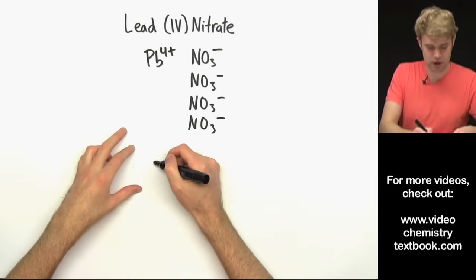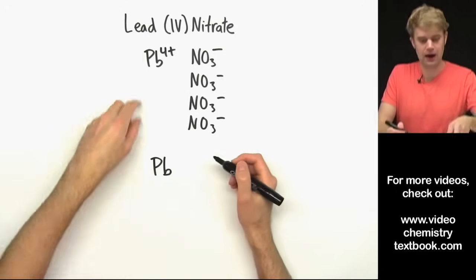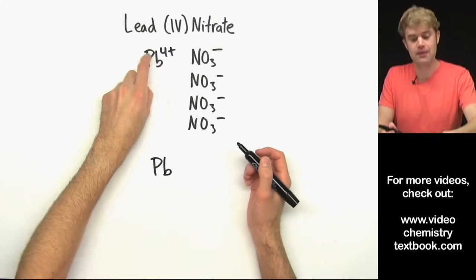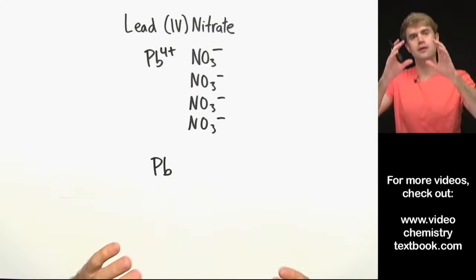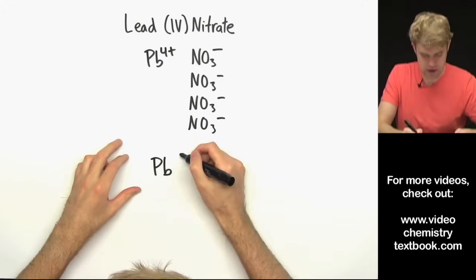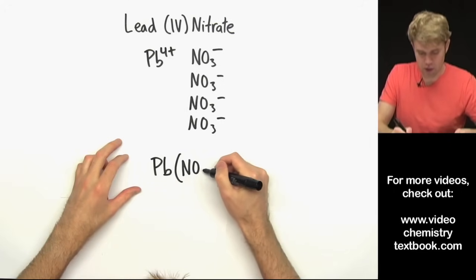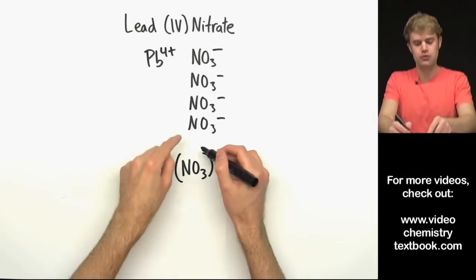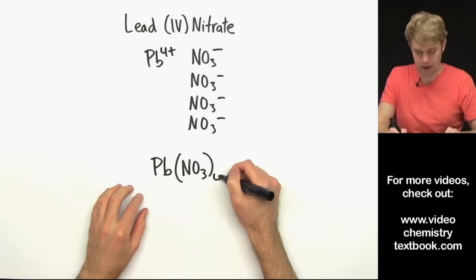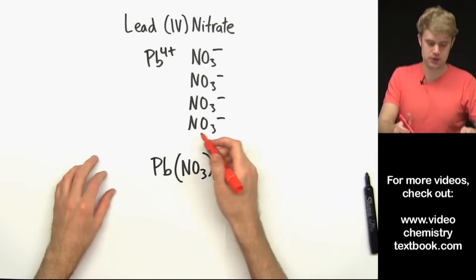So my formula is going to be Pb. I have just one of those. And then I have 4 of these nitrates. And since this is a polyatomic ion, I'm going to use parentheses because I want to show that I have 4 of this whole clump. So I put NO3 in parentheses and then do 4 outside those parentheses.